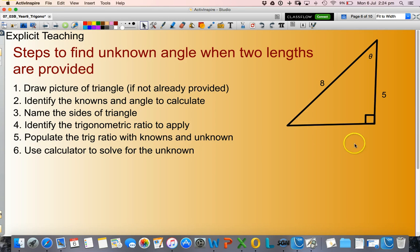Again, my right angle triangle, one known side length of 5, another known side length of 8, an unknown angle theta.